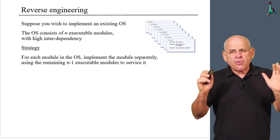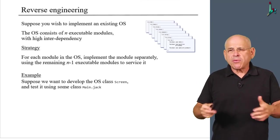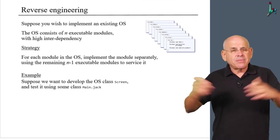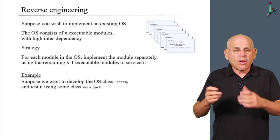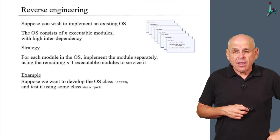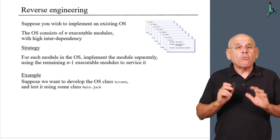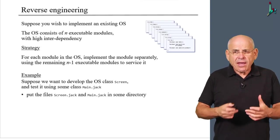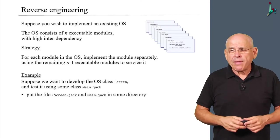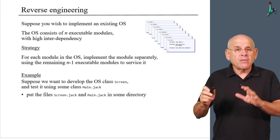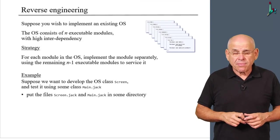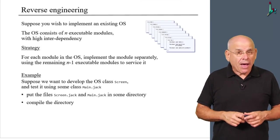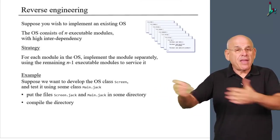So going back to Nand2Tetris, let us assume that we want to develop the screen class, which is one of the eight OS classes, and test it using some supplied test code, which we call main.jack. How should we go about doing it? Well, the development strategy is going to be surprisingly simple. What we suggest that you do is that you take the screen.jack file that you want to develop and the supplied main.jack and put them in some directory on your PC. Then you can go on and compile the directory using the jack compiler.